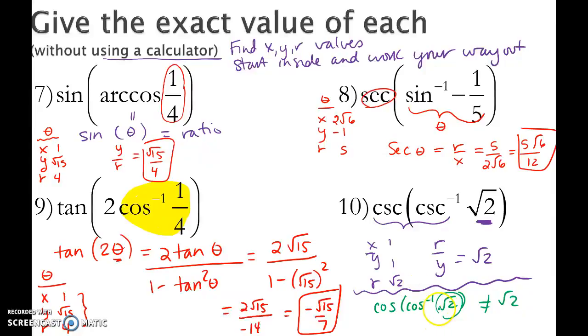And the reason why it's not is because root 2 isn't even a valid ratio for cosine. It's not possible. So in this case, this would be no solution or undefined because cosecant of root 2 won't work in the first place.